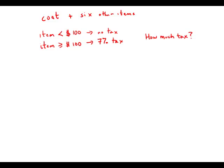So really what we need to know here is the number of items that are over $100. Statement number one tells us that the coat was $125.